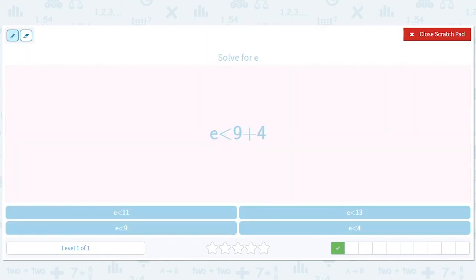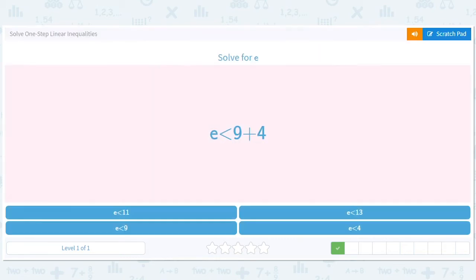E is less than 9 plus 4, which is 13. So E is less than 13. E is, and so is she. Just kidding. I'm going to try to stop making pronoun jokes.